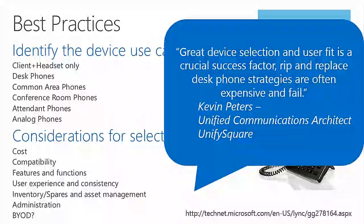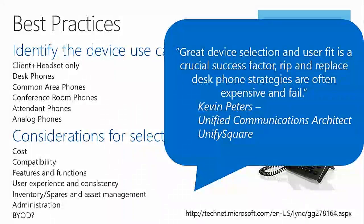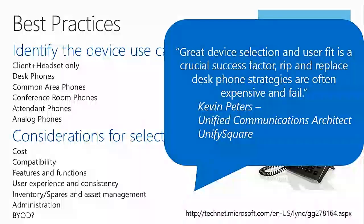Kevin Peters, Unified Communications Architect at Unified Square, said that great device selection and user fit is a critical success factor, and that rip-and-replace desk phone strategies are often expensive and fail. What he's basically saying is that taking the old PBX paradigm — where everybody gets a gray phone with an orange button — and ripping it all out and sticking one device in its place is not a recipe for success. Instead, analyze each individual person's tasks and jobs, then choose devices for them from a subset of the available options.